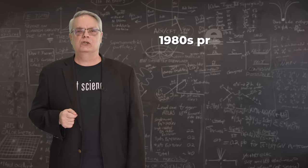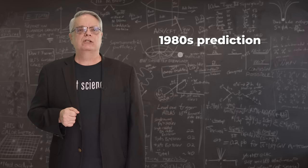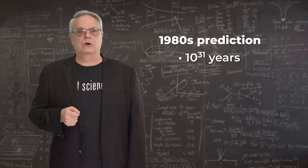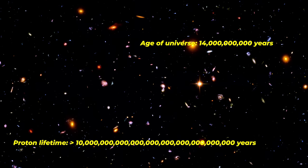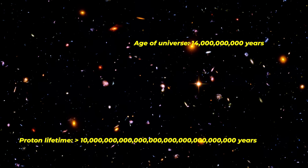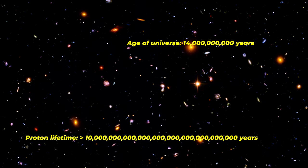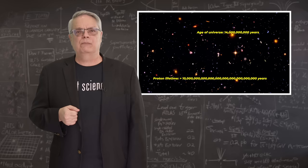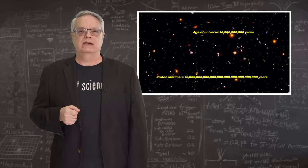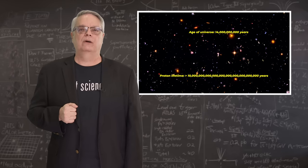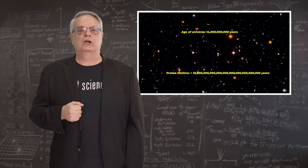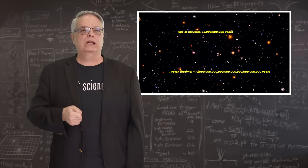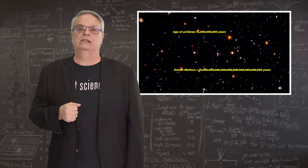Even back in the 1980s when these theories were new, predictions for the lifetime of the proton were about ten to the thirty-one years. That sounds like a lot, but it's more than that. The universe has been around for fourteen billion years. To simplify things, let's call that ten billion years, or about ten to the tenth power. That means that the shortest predicted lifetime of the proton is about ten to the twenty-one times longer than the universe has existed.